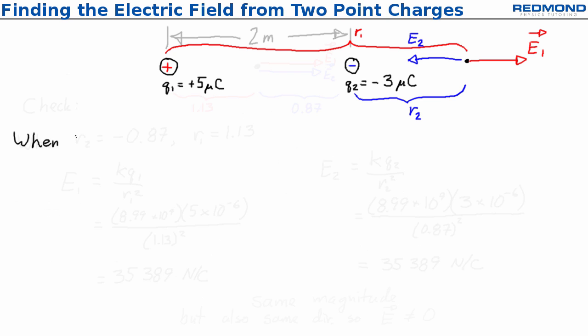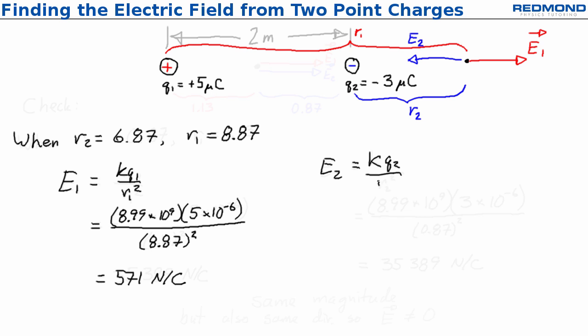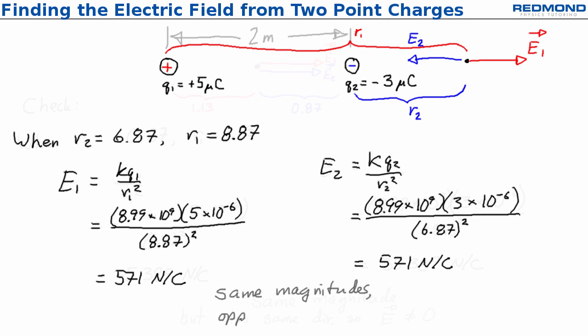How about when R2 is equal to 6.87? Then R1 is equal to 8.87, and E1 and E2 are both 571 newtons per coulomb. In this case, E1 and E2 point in opposite directions, so it is possible for them to cancel out.